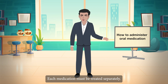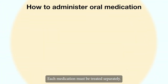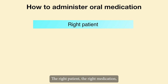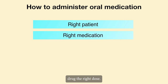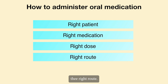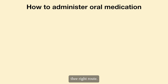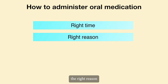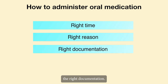The seven rights are: the right patient, the right medication, the right dose, the right route, the right time, the right reason, and the right documentation.